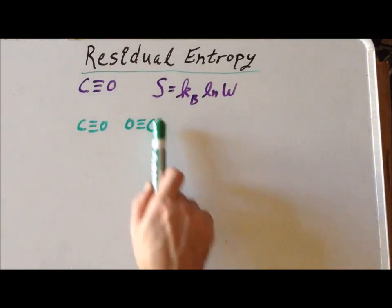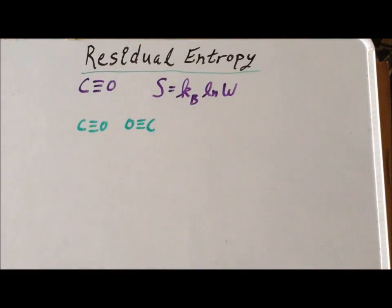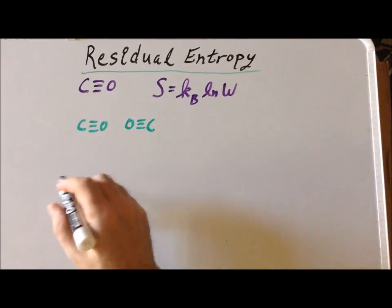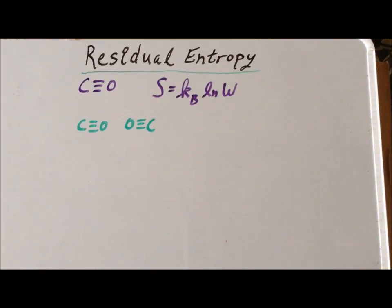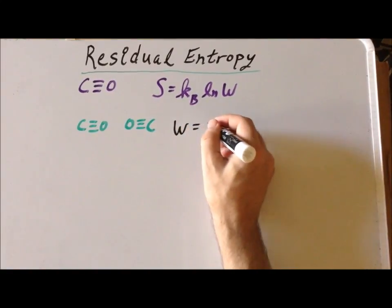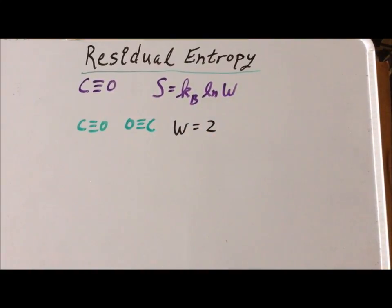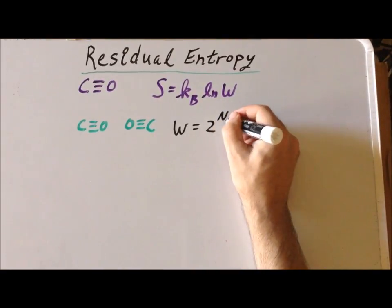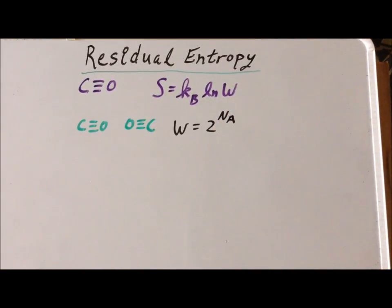So let me consider that I have Avogadro's number of carbon monoxide atoms. So that means that the total number of ways I can arrange these atoms, each one has two possible arrangements. And since there is an Avogadro's number, the total number of possible arrangements is going to be two to the Avogadro's number power.